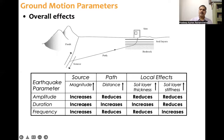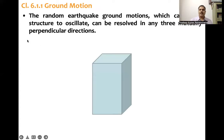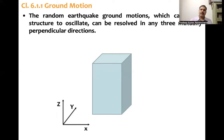These are the characteristics of earthquake ground motion and the parameters on which they depend. The next point is that random earthquake ground motions which cause the structure to oscillate can be resolved into any three mutually perpendicular directions. So the random signal can be resolved into say an x component, y component, and vertical component — three components.